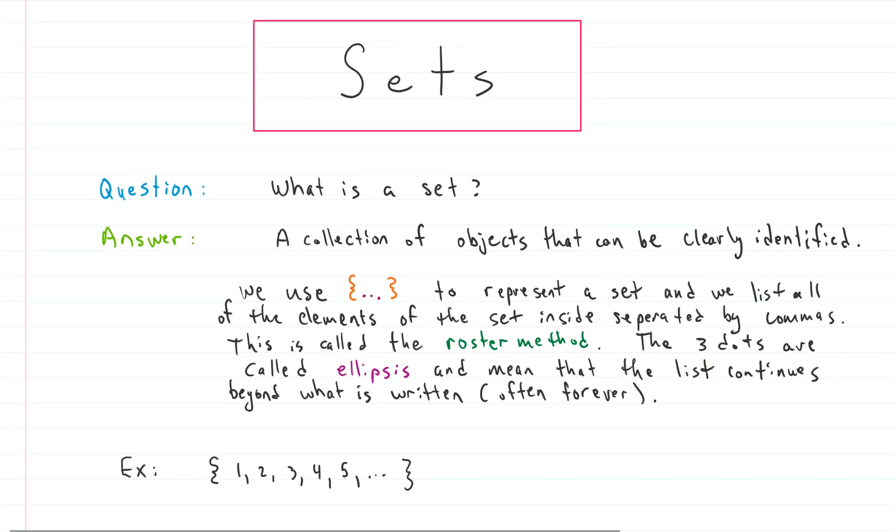There's some things that we generally do to make everyone know that we have a set or we're talking about a set. One of those things is that we use these curly brackets. The curly brackets denote a set, and we list all the elements inside separated by commas. When we have all these elements listed separated by commas, we call that the roster method.